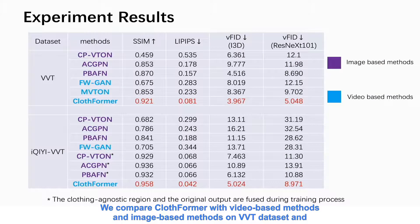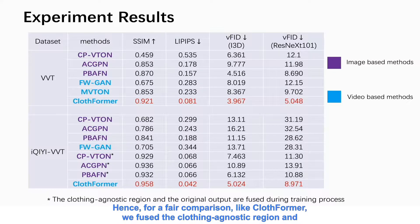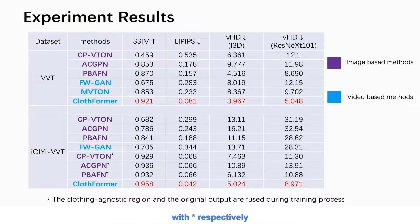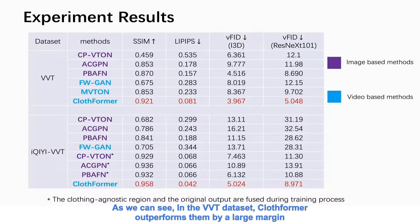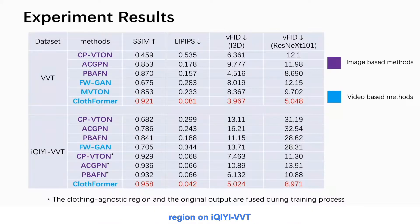We compare Clothformer with video-based methods and image-based methods on the VVT dataset and our wild dataset iqie-VVT. For a fair comparison, like Clothformer, we fused the clothing-agnostic region and the original synthesized try-on results of these methods during the training process, denoted with asterisk respectively. As we can see, on the VVT dataset, Clothformer outperforms them by a large margin. Also, Clothformer surpasses the baseline methods with or without fusing the clothing-agnostic region on iqie-VVT.